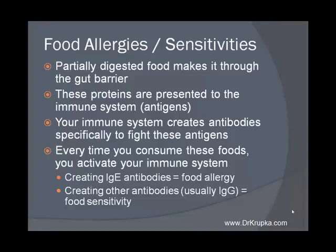You can also get, in your digestive tract, food allergies and sensitivities. There are a lot of technical definitions of allergy versus sensitivity — we're not going to get into all that here, that's why you'll just see me list both of them each time I talk about it. Partially digested food makes it through the gut barrier — we just saw mechanically how that can happen. These proteins are presented to the immune system; those are called antigens. Your immune system creates antibodies specifically to fight these antigens. Every time you consume these foods, you present those proteins and activate your immune system to fight them. You can create IgE antibodies, which is technically called a food allergy, or other antibodies such as IgG or IgA antibodies, which tend to be called food sensitivities. Mechanically they basically work the same way — they have different rates at which they inflame your system, but essentially you can think of them as one and the same. They're just different antibodies.